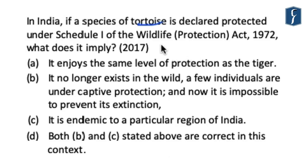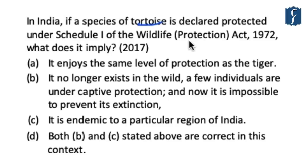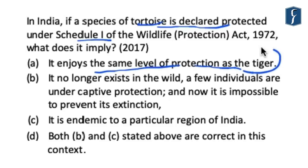An important takeaway is that you should understand the five schedules of Wildlife Protection Act, which deals with the protection of both plants as well as animals. The number of schedules starting from one are in decreasing order of protection level. The Wildlife Protection Act provides for the protection of wild animals, birds, and plants. Schedule 1 and Part 2 of Schedule 2 provide absolute protection, meaning offenses against animals included in Schedule 1 attract the highest level of penalties. Hence if a species of tortoise is declared protected under Schedule 1, it enjoys the same level of protection as that of Tiger, which is also a Schedule 1 animal. So the answer is option A.